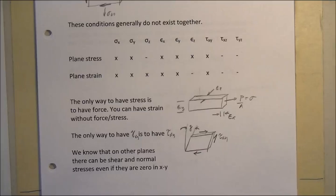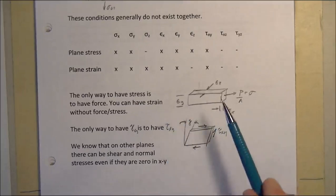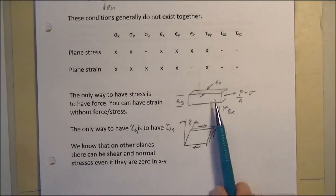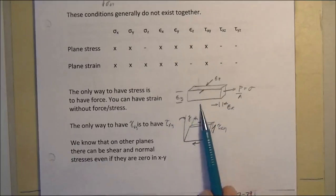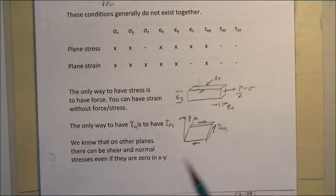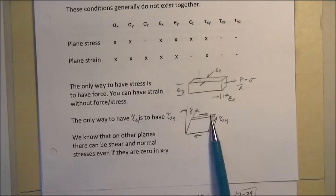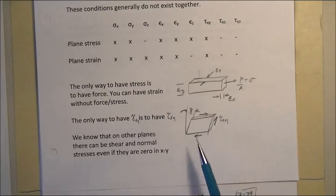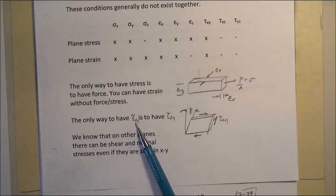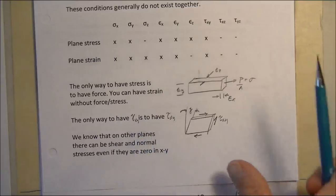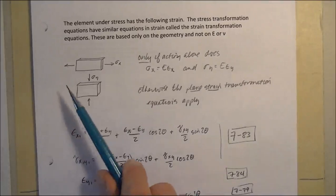Just a review: the only way to have stress is to have some sort of force. If we have a force pulling on an object in one direction, we know there's strain in all three directions but only stress in that direction. There's no stress in the y direction unless there's some force in the y direction. Similarly, the only way to have gamma — the shear strain — is to have some tau or shear forces causing that deformation.